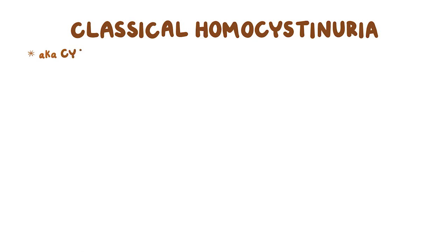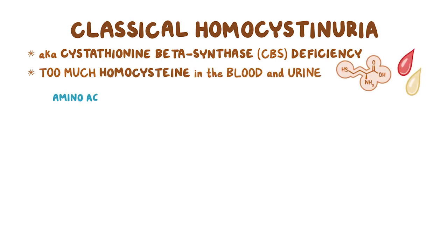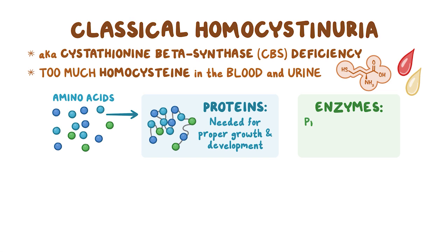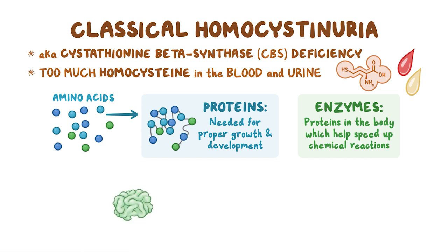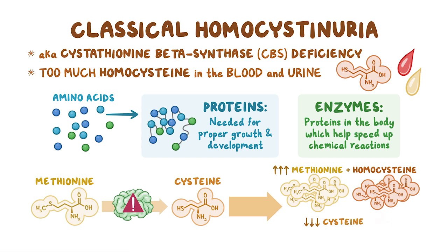Classical homocystinuria, also called cystathionine beta-synthase or CBS deficiency, is characterized by too much of the amino acid homocysteine in the blood and urine. Amino acids are the building blocks of proteins, and proteins are needed for proper growth and development. Enzymes are a type of protein which helps speed up chemical reactions. CBS deficiency usually occurs when there is a problem with one of the enzymes involved in converting the amino acid methionine into the amino acid cysteine, resulting in a buildup of methionine and homocysteine and decreased production of cysteine.